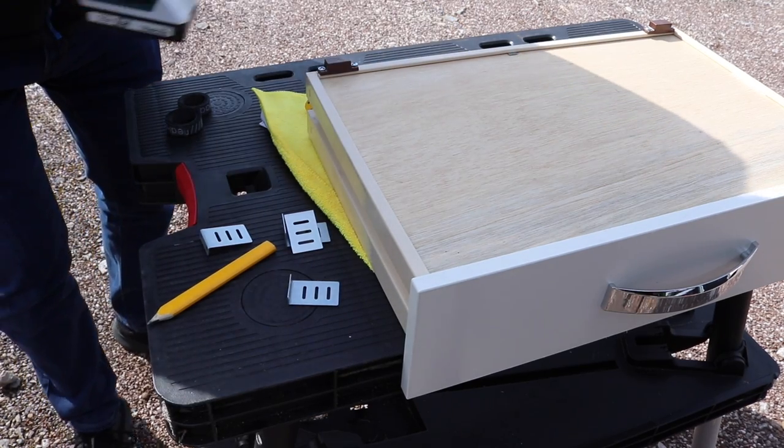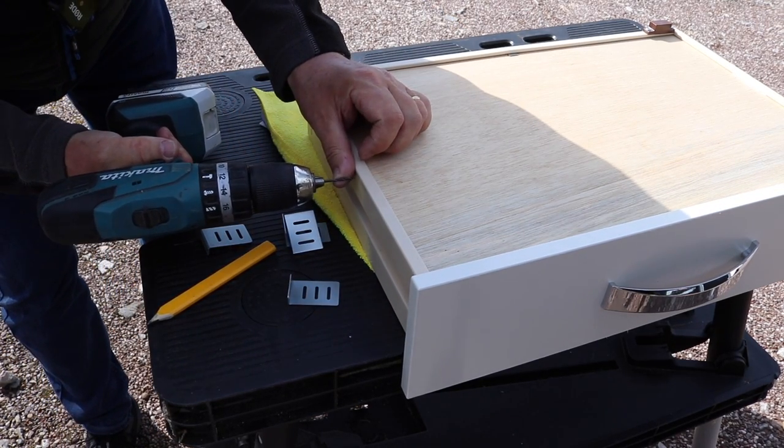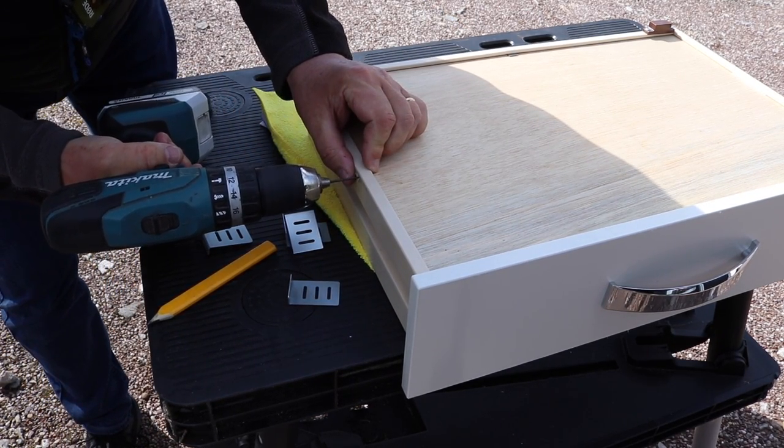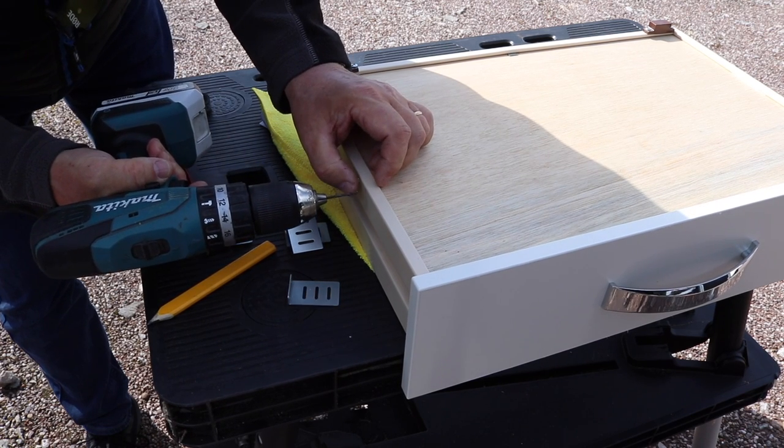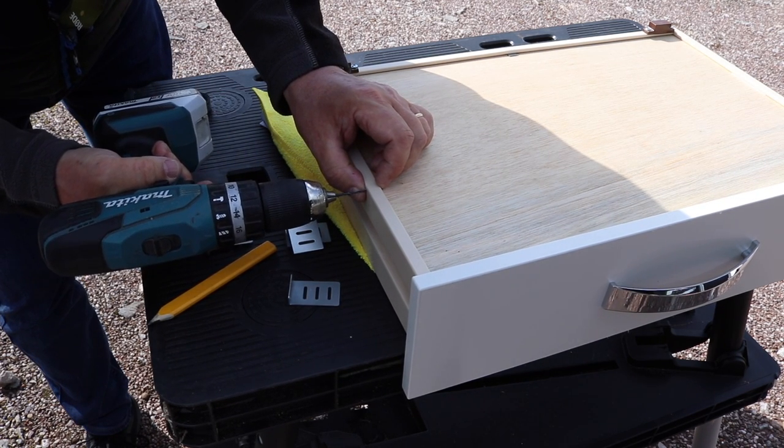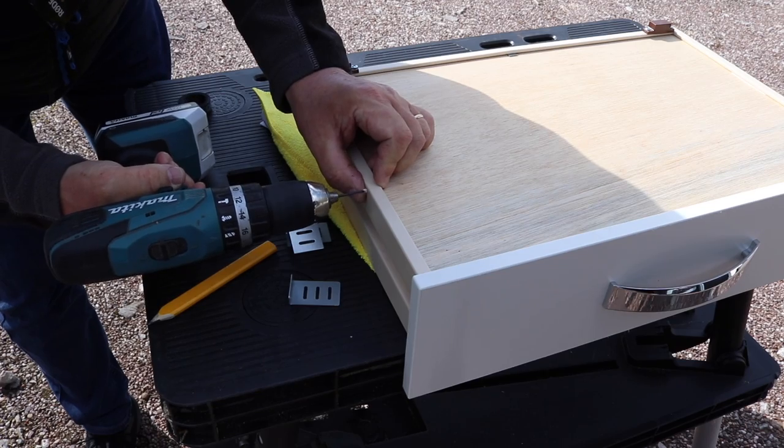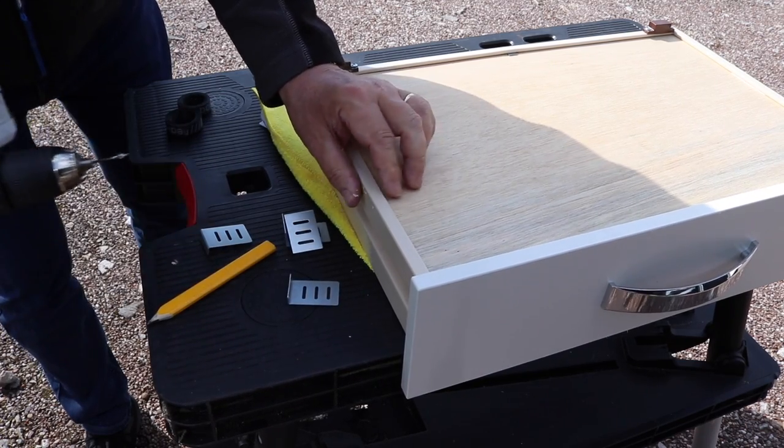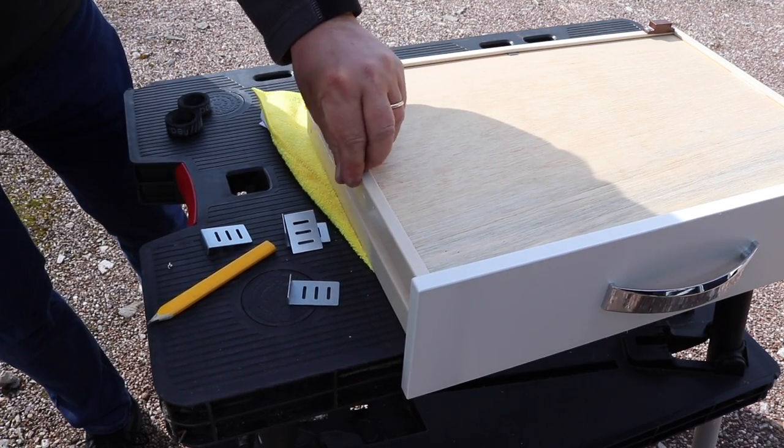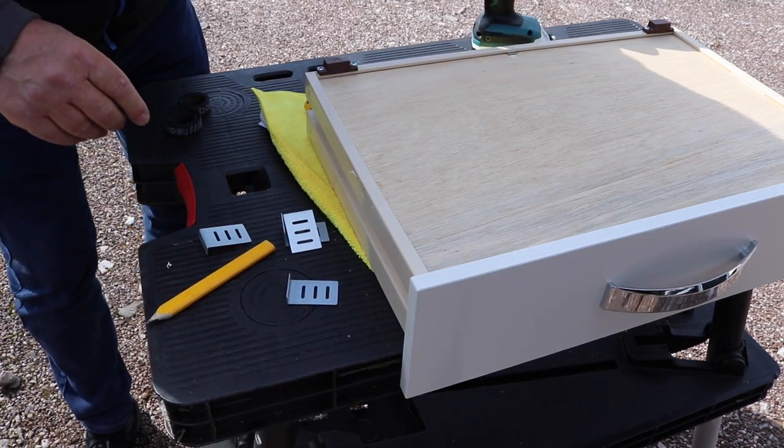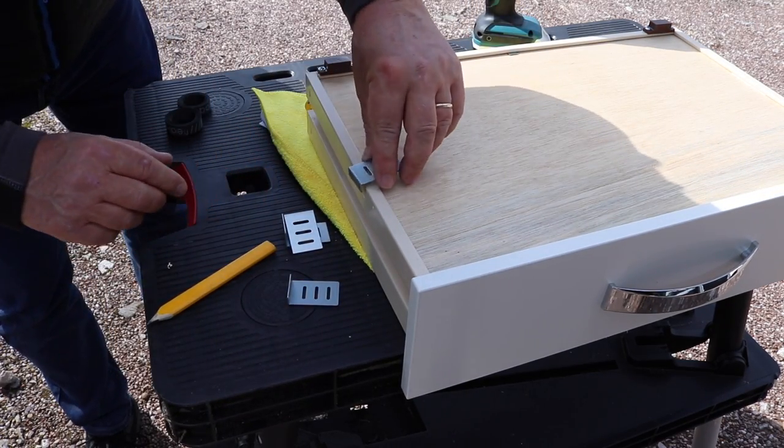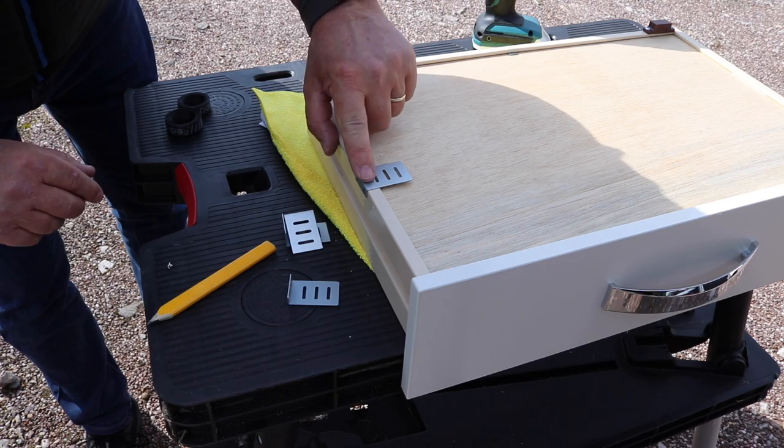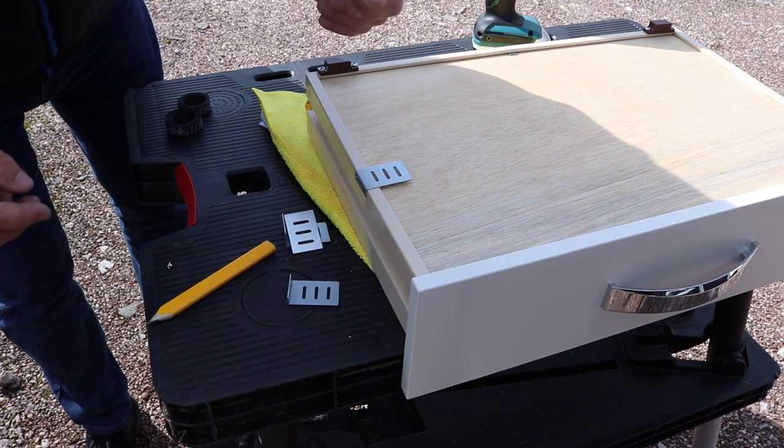I'm going to take our two-millimeter drill bit. Now the reason why I chose to pilot this is I don't want it actually splitting or cracking, so that's the reason why we're doing what we're doing now. Okay, so we're there. We're going to take our one-centimeter screws and screw this bracket in in a moment.